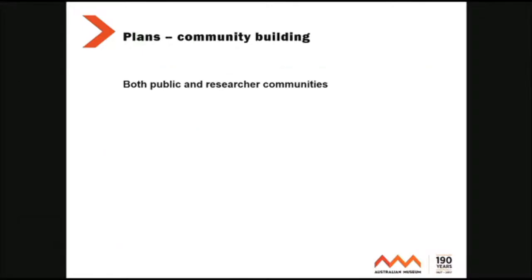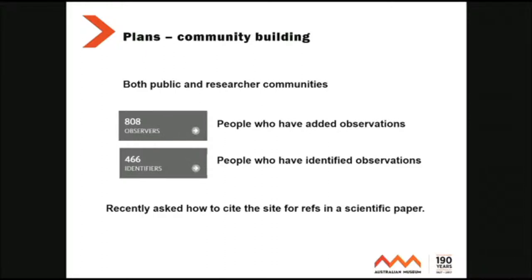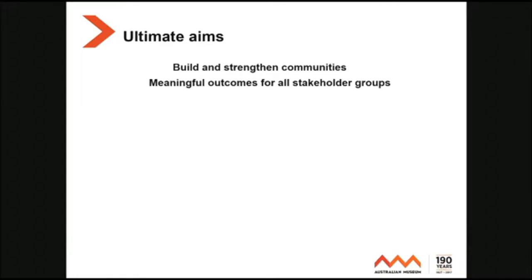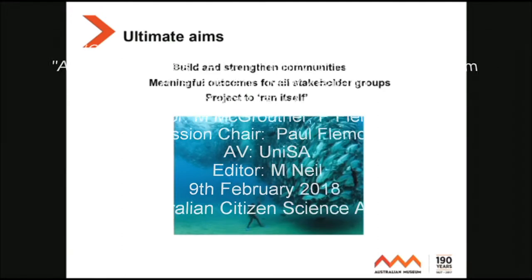Plans: community building. I want to build both public and researcher communities. At the moment there are 808 observers and 466 identifiers, and that's going up all the time. I was recently asked how to cite the site for references in a scientific paper, so we're getting traction in the scientific community as well. The ultimate aim is to build and strengthen communities, get meaningful outcomes for all stakeholder groups. I'd like to step back slightly so that I spend less time behind the computer and more time in the field. Thank you.